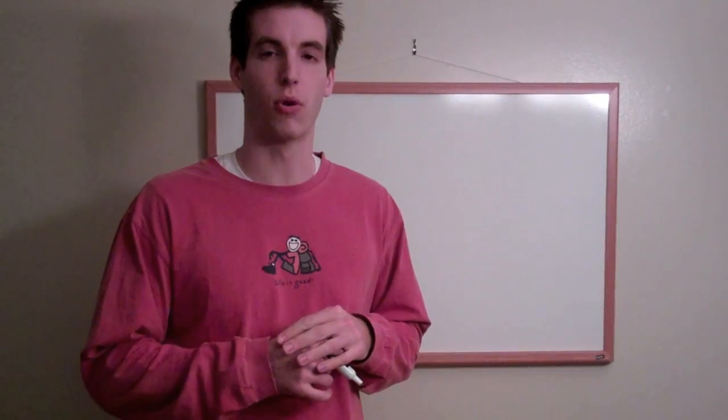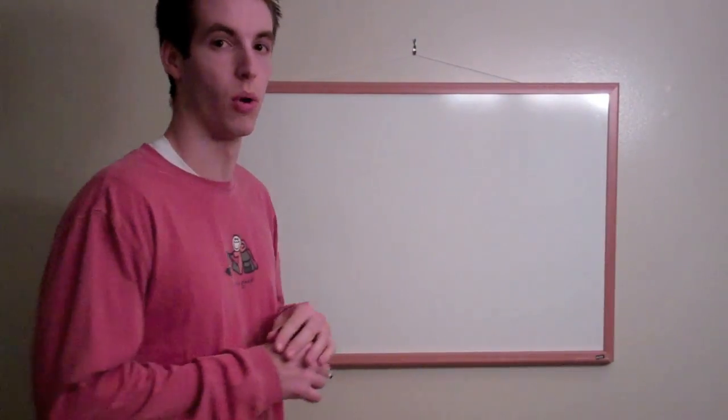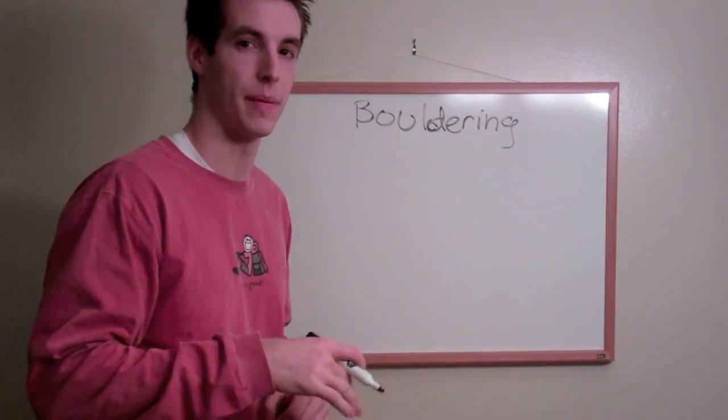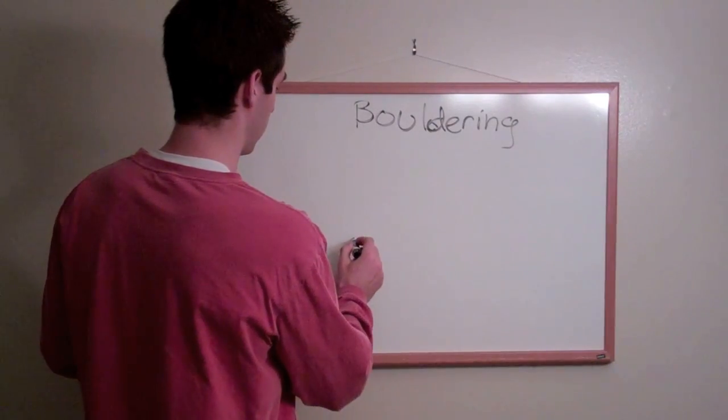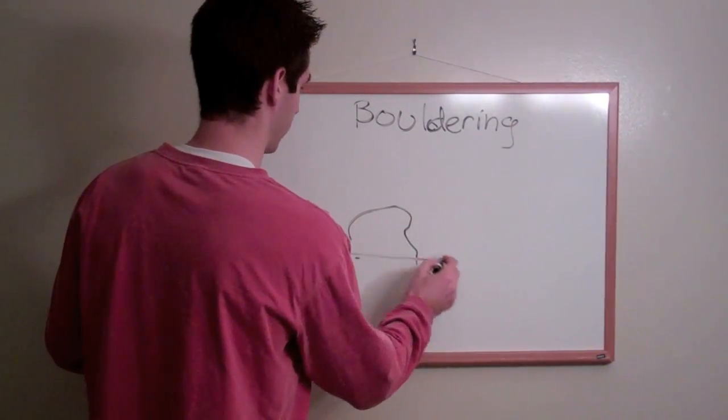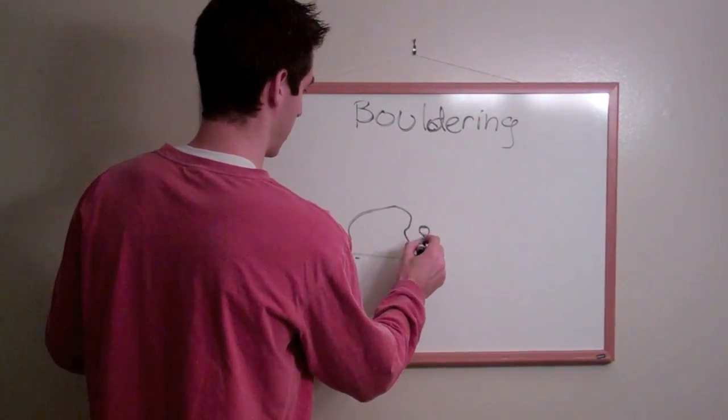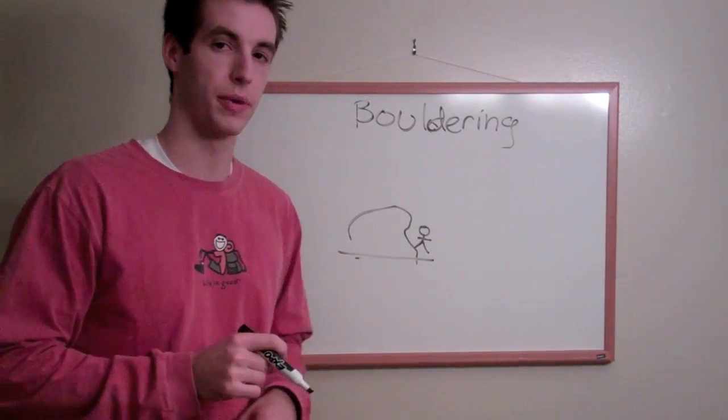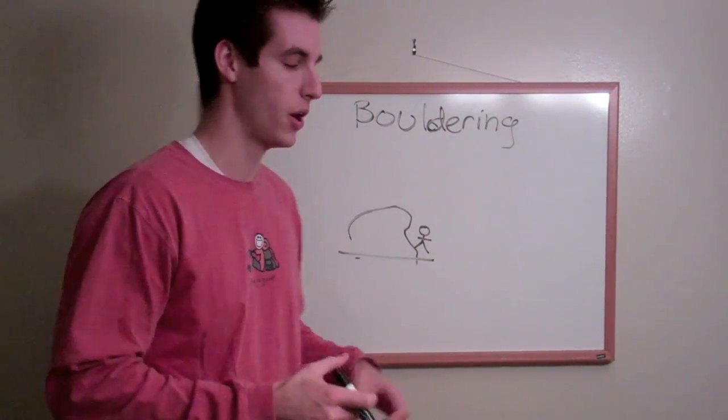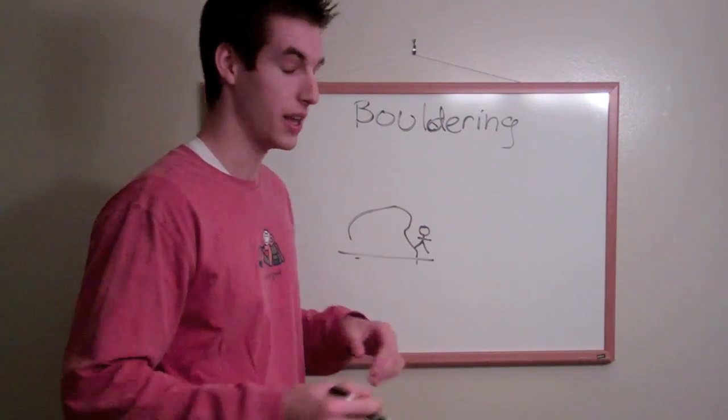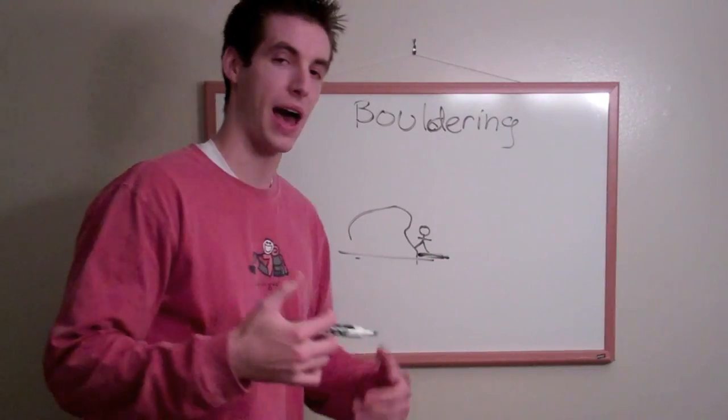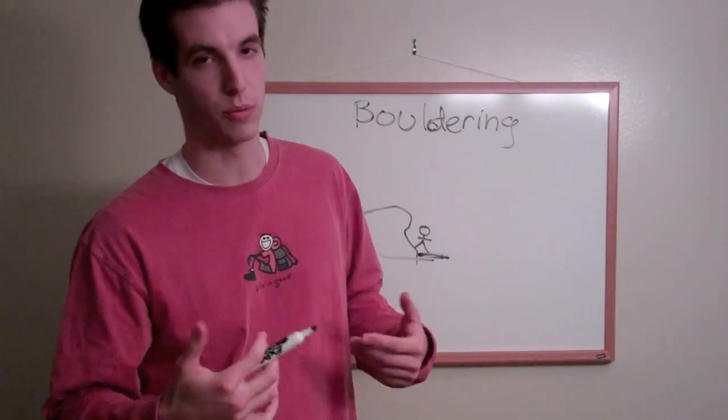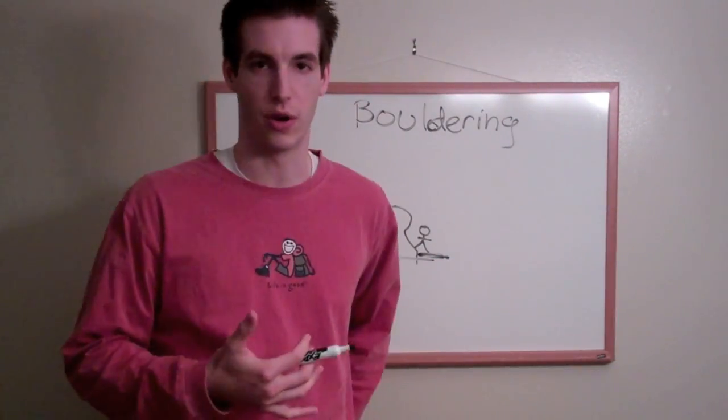The first one is bouldering. Bouldering is basically just climbing at low levels. So if we had a small boulder on the ground, our climber is just going to climb up the boulder, and his only form of protection is called a bouldering pad, which is basically just a small mattress that you would place underneath you. In case you were to fall, you would fall on the pad instead of on the hard ground, so you wouldn't break your ankles or injure yourself.